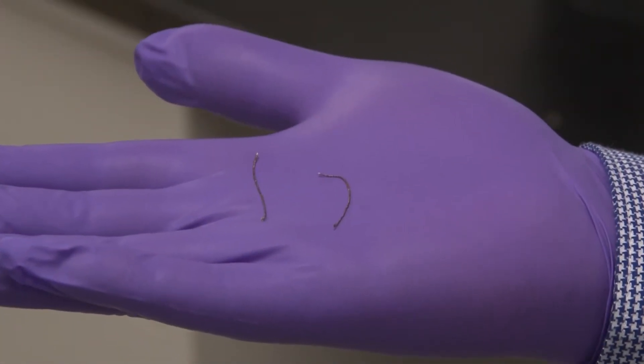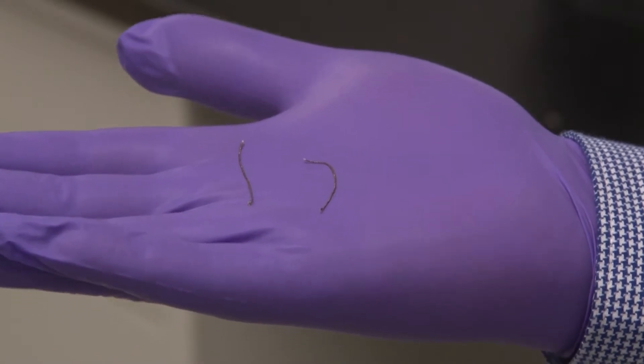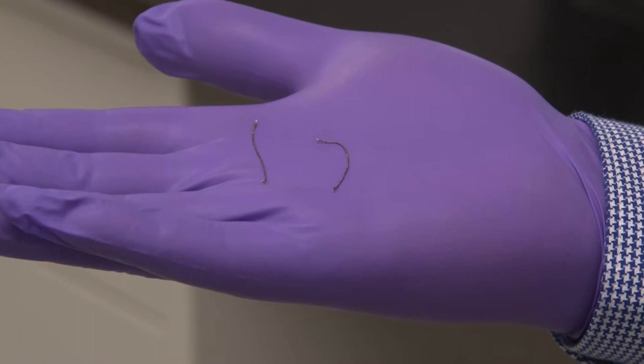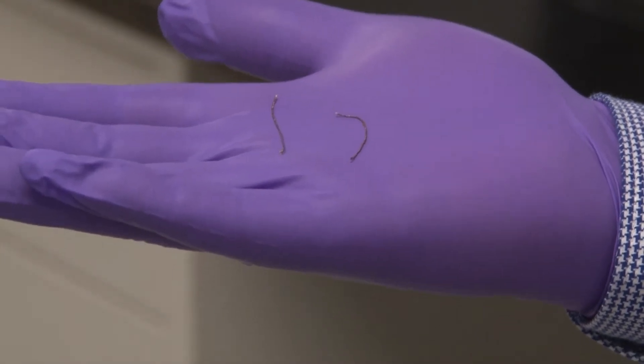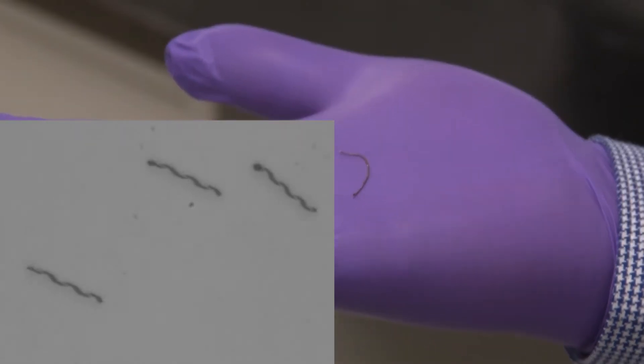What I have in my hand here are these magnetic threads. Threads are coated with magnetic nanoparticles. These threads respond to magnetic field, and we can use these threads for magnetic actuation. We can make them move in the presence of magnetic field.